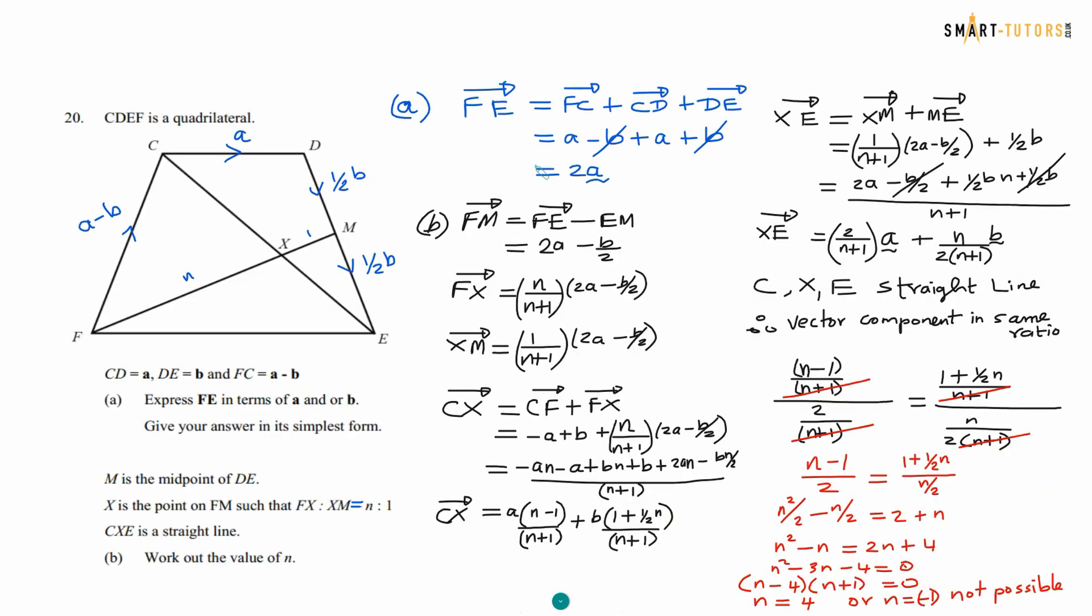Question number 20. It's a vector question. C, D, E, F is a quadrilateral is given. So express F, E in terms of A and B give you answer to the simplest form. So F, E means F to E here. You go all the way F to C, C to D, D to E. So you do your maths properly. Algebra terms A minus B plus A plus B minus B plus B cancel A plus A is 2A. That is first part's answer. Second part, M is the midpoint here. Midpoint means the B vector divided into 2, half B, half B. Then X is the point FM. FM, there's a point X. The ratio is N is to 1.